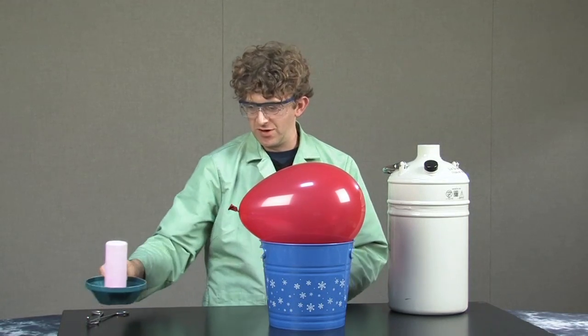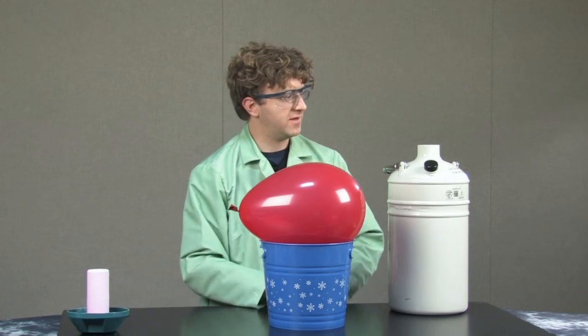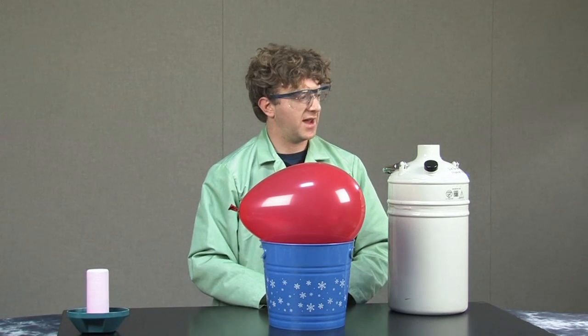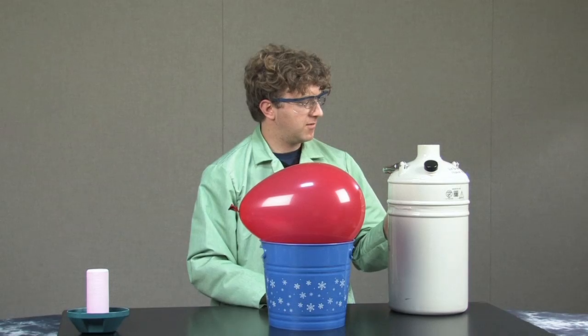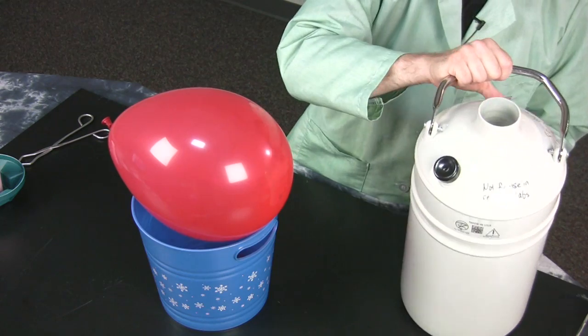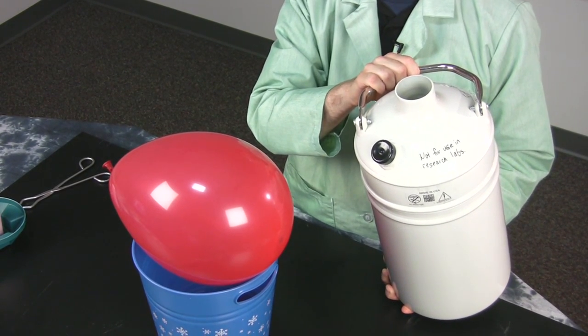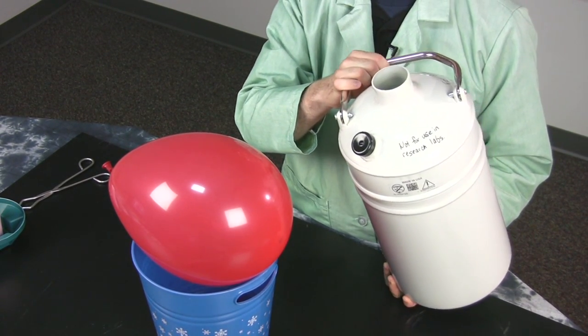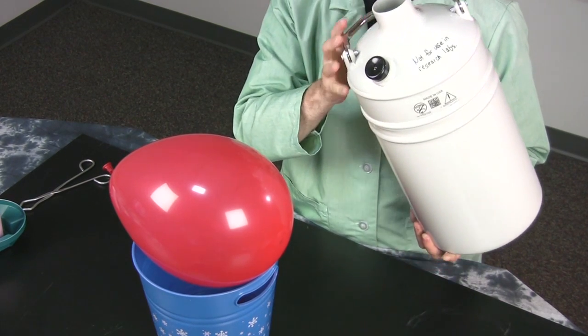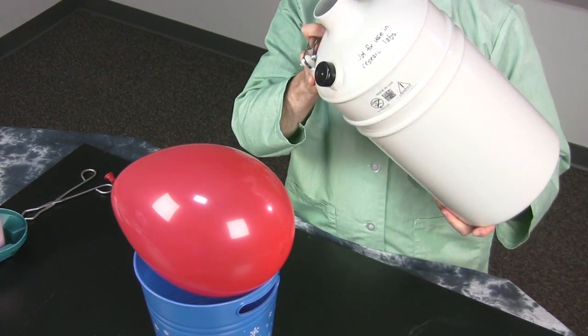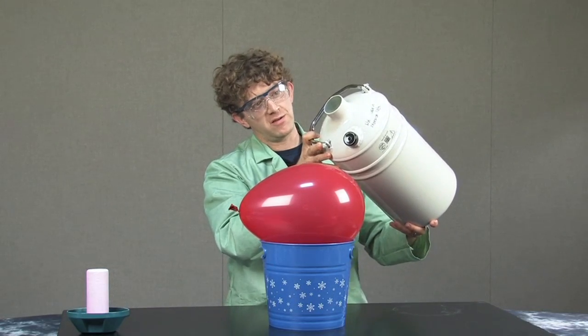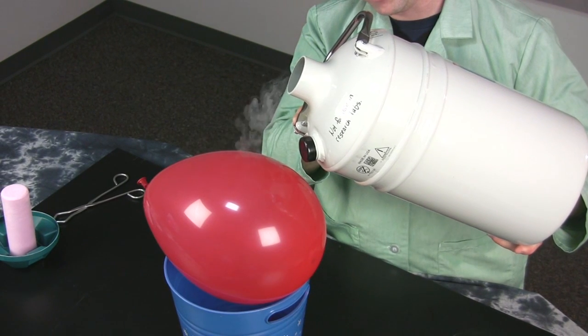Nitrogen is a very common substance. It makes up the majority of the air in our atmosphere. In its liquid form, it is very, very cold. The boiling point of liquid nitrogen is minus 196 degrees Celsius. And you can see a little bit of vapor coming off here.